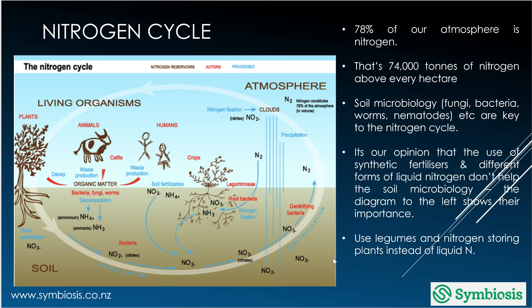The other cycle to focus on is the nitrogen cycle. There's been a lot of use of liquid nitrogen historically in the New Zealand environment, whilst 78% of the atmosphere is nitrogen — that's 74,000 tons above every hectare. The nitrogen cycle is driven by microbiology: bacteria, fungi, worms and so on. If we're putting liquid N, urea, or any form of it in, we're telling plants they don't need to work with bacteria and fungi, so we break this cycle down — and that's not regenerative.